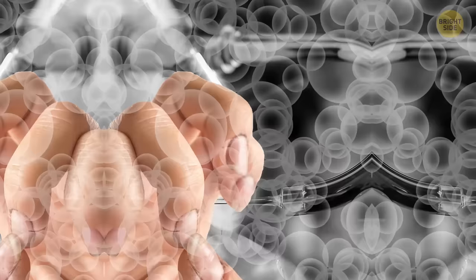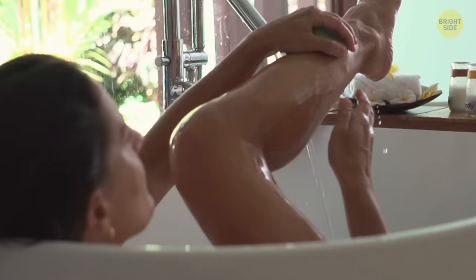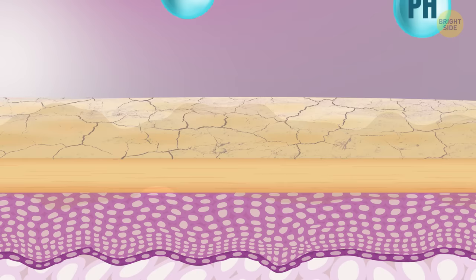Number 4: Do you go overboard with the exfoliation? Exfoliating your body in the shower is a great way to remove dead skin cells and dirt. But if you do it way too often, it can dry out your skin. That in turn disrupts the skin's natural pH balance, which will cause it to produce even more oil to compensate for the dryness. Then, you get clogged pores and body acne, and yeah, it's a whole mess.